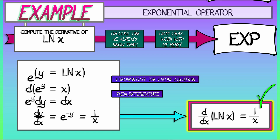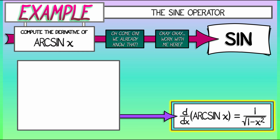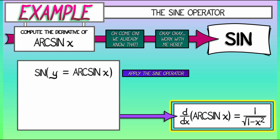What about a different operator? The sine operator works really well for computing the derivative of arc sine of x. You may or may not recall that the derivative of arc sine is 1 over the square root of 1 minus x squared, but let's show it. Let's set arc sine of x equal to y and take the sine of both sides. Although we may not know the derivative of arc sine, we definitely know the derivative of sine.